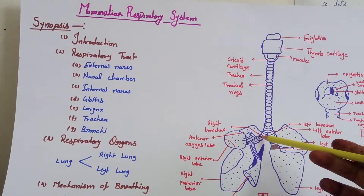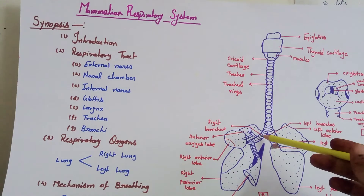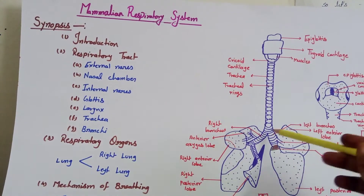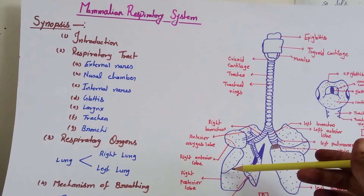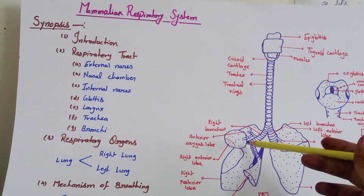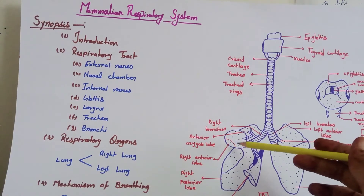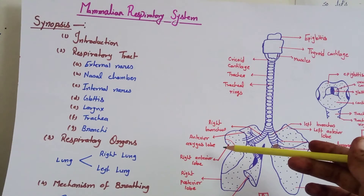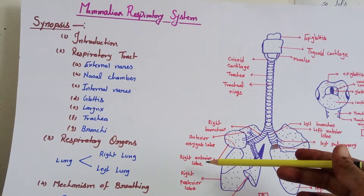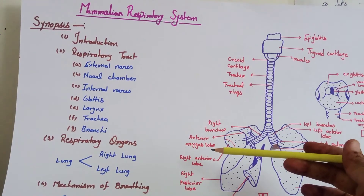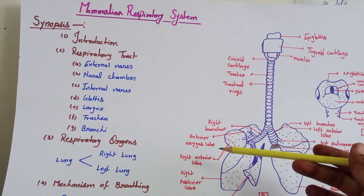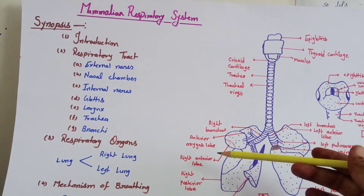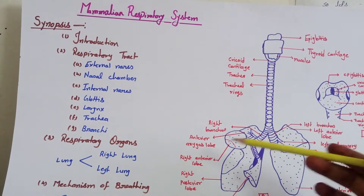In the thoracic cavity, the trachea divides into two parts: right bronchus and left bronchus. The left bronchus enters the left lung and the right bronchus enters the right lung. The bronchus further bifurcates into smaller parts called bronchioles, and bronchioles divide into finer branches called alveolar ducts, which open into air sacs called alveoli. The alveoli allow direct exchange of gases.